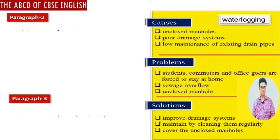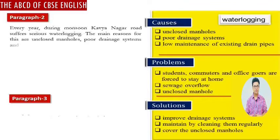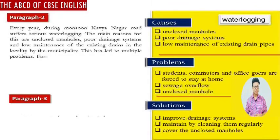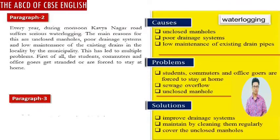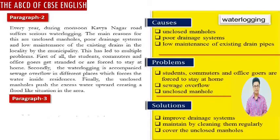Let's get to writing paragraph two. We can begin: Every year during monsoon, Kavinagar roads suffer serious waterlogging. The main reasons are poor drainage system and low maintenance of the existing drains in the locality by the municipality. This has led to multiple problems. First of all, students, commuters and office workers are stranded or forced to stay at home. Secondly, waterlogging is accompanied by sewage overflow in different places, which forces water inside residences. Finally, the unclosed manholes push excess water upward, creating a flood-like situation in the area.